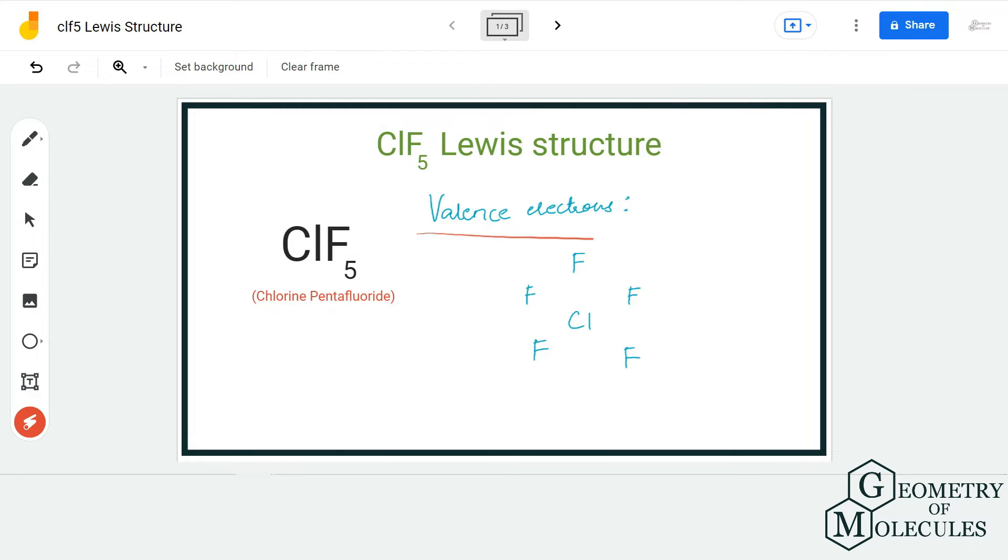Here we have one atom of chlorine and five atoms of fluorine. Both these atoms have seven valence electrons in their outer shell, and it results in a total of 42 valence electrons for this molecule.